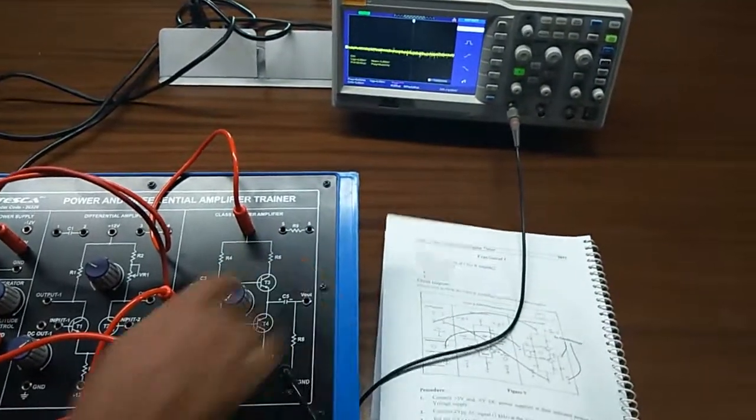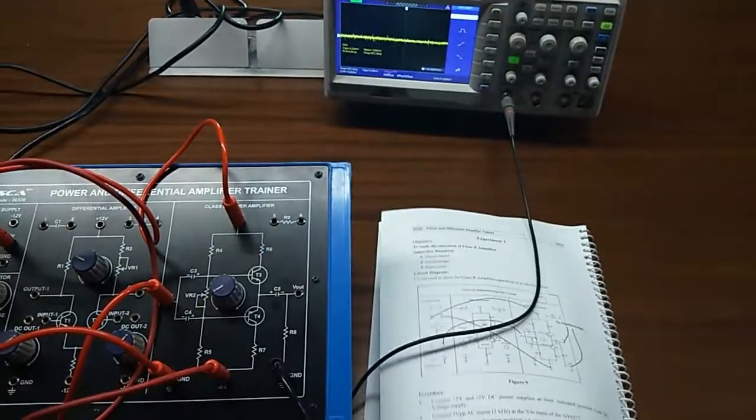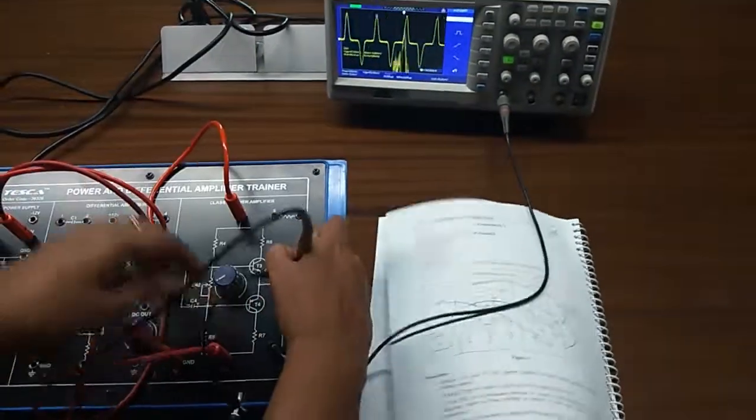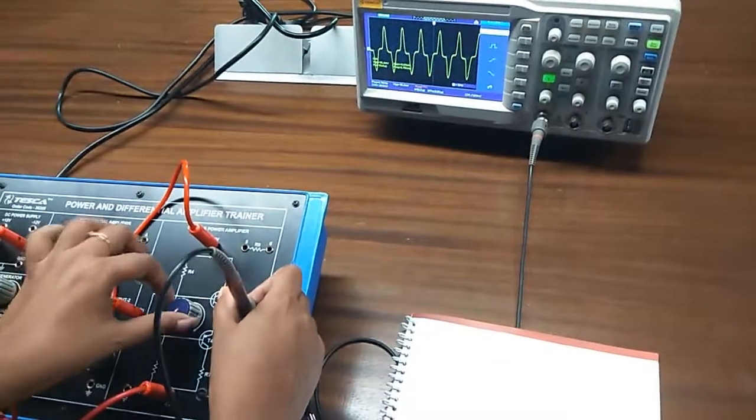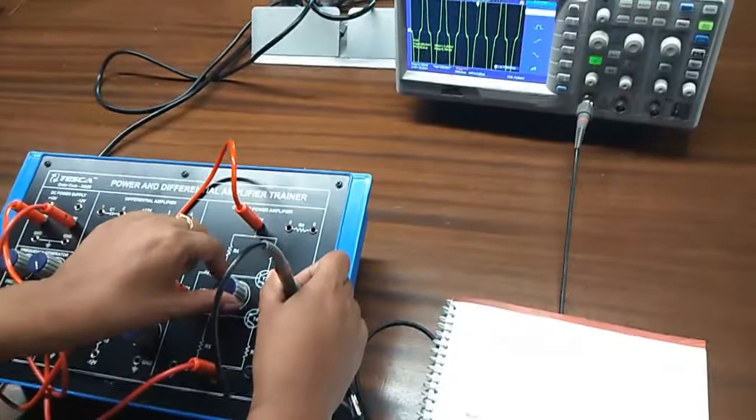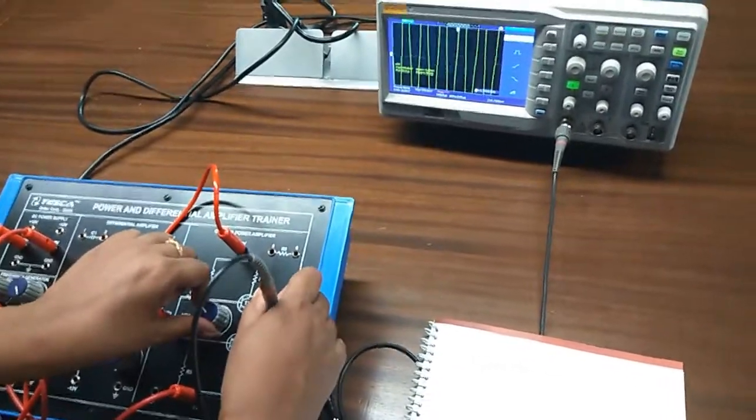Give a low bias voltage with the help of VR2 and observe the output. Now, rotate the VR2 in clockwise position till you get a clear sine wave.